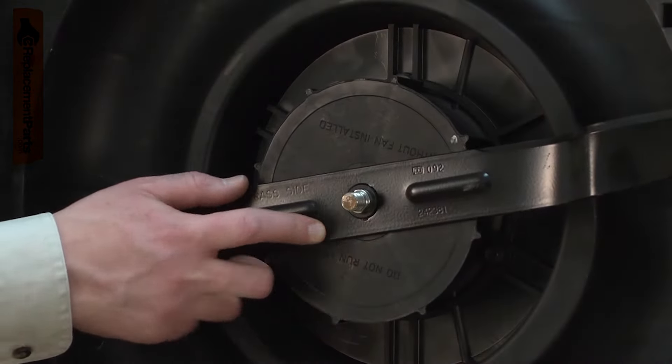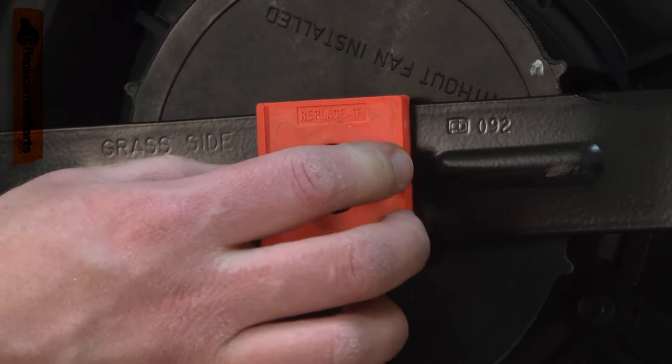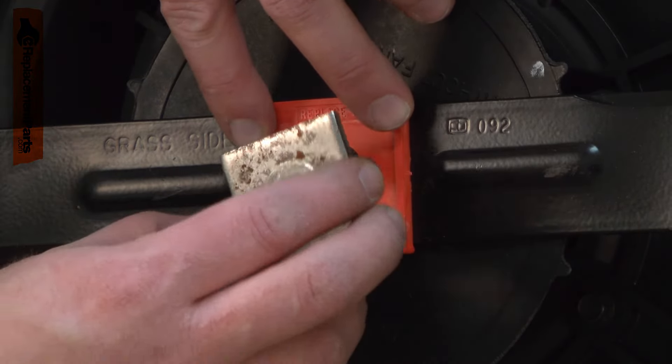So I'll install the blade onto the hub on the fan, followed by the insulator, and the metal spacer.